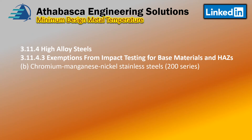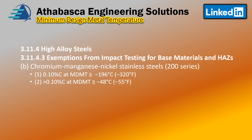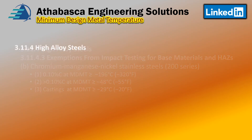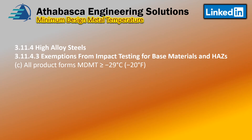For chromium-manganese-nickel stainless steels, the 200 series, if carbon content is no more than 0.1% and the MDMT is greater than minus 196°C, you are exempt. If carbon content is greater than 0.1%, the MDMT exemption is only to minus 48°C — very similar to the other materials. For castings, it's set to minus 29°C. For all product forms, there is an exemption if the MDMT is equal to or greater than minus 29°C.